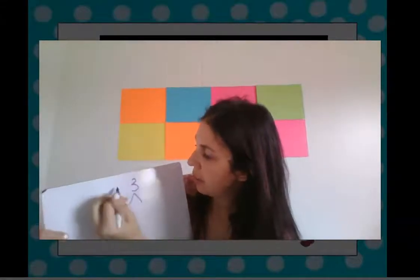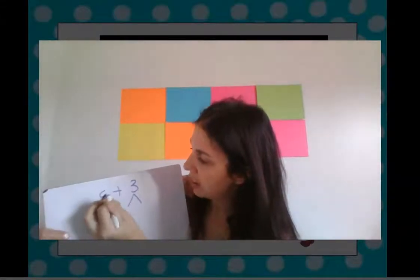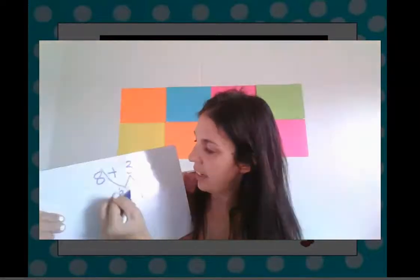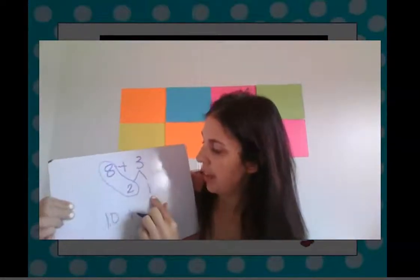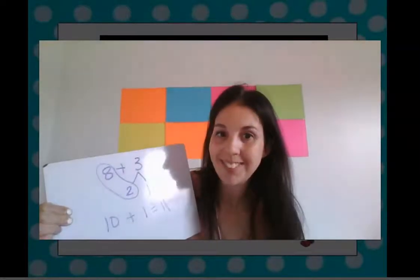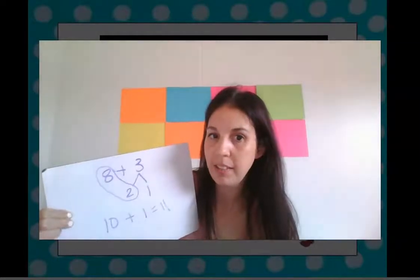Okay so we took the three. We had the three. And we broke the three up into two and one. And then the eight and the two gives us our ten plus one more equals eleven. Okay that's how we did that.